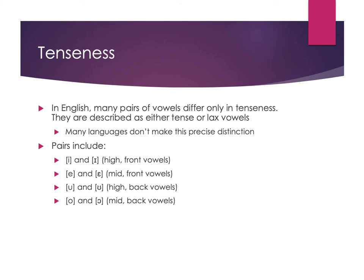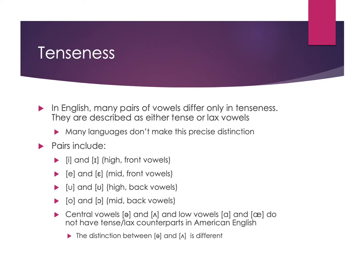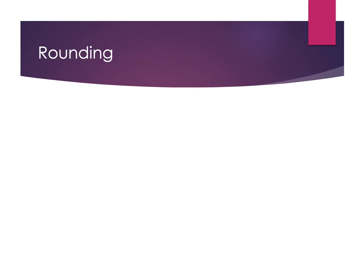The same thing applies: you tense for the A sound but not for the E sound. For back vowels we have the distinction between U and horseshoe-U, and between OH and open-OH, where the only distinction is tense versus lax. The central vowels — schwa and wedge — and the low vowels don't have a tense or lax counterpart; they're all considered lax because you're not specifically tensing your jaw for them. The only tense vowels we have are EE, A, U, and OH; all the rest are considered lax.